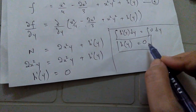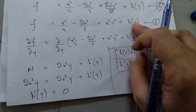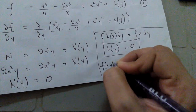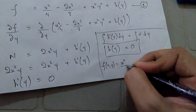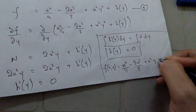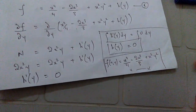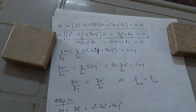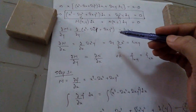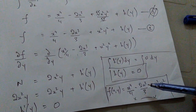Since h(y) = 0, we substitute it back into equation 1. The final solution is f = x⁴/4 − 2x³/3 + x²y² = C. This is the solution of the non-exact differential equation that was converted into exact form and then simplified to give the respective solution function.